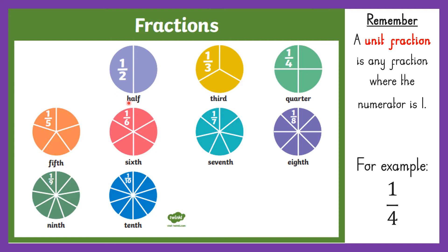We've got half — one part out of two altogether. A third — one part out of three altogether. A quarter — one part out of four altogether. A fifth — one part out of five parts altogether. A sixth — one part out of six altogether. A seventh — one part out of seven parts altogether. An eighth — one part out of eight parts altogether. A ninth — one part out of nine parts altogether. And a tenth — one part out of ten equal parts altogether.